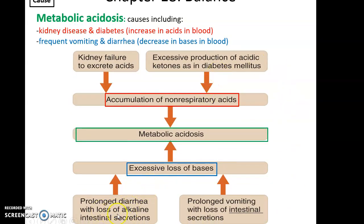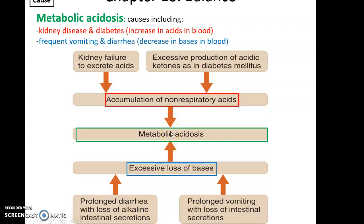You could also have metabolic acidosis from a loss of bases. Prolonged diarrhea can lead to a loss of the alkaline solutions in the intestines, affecting blood pH because we expect the intestines to be somewhat alkaline. Another possibility is prolonged vomiting — a great loss of stomach gastric acids, and in some cases even loss of intestinal secretions. Since intestines are normally basic or alkaline, losing their fluids means an excessive loss of bases, disrupting the balance between base and acid.